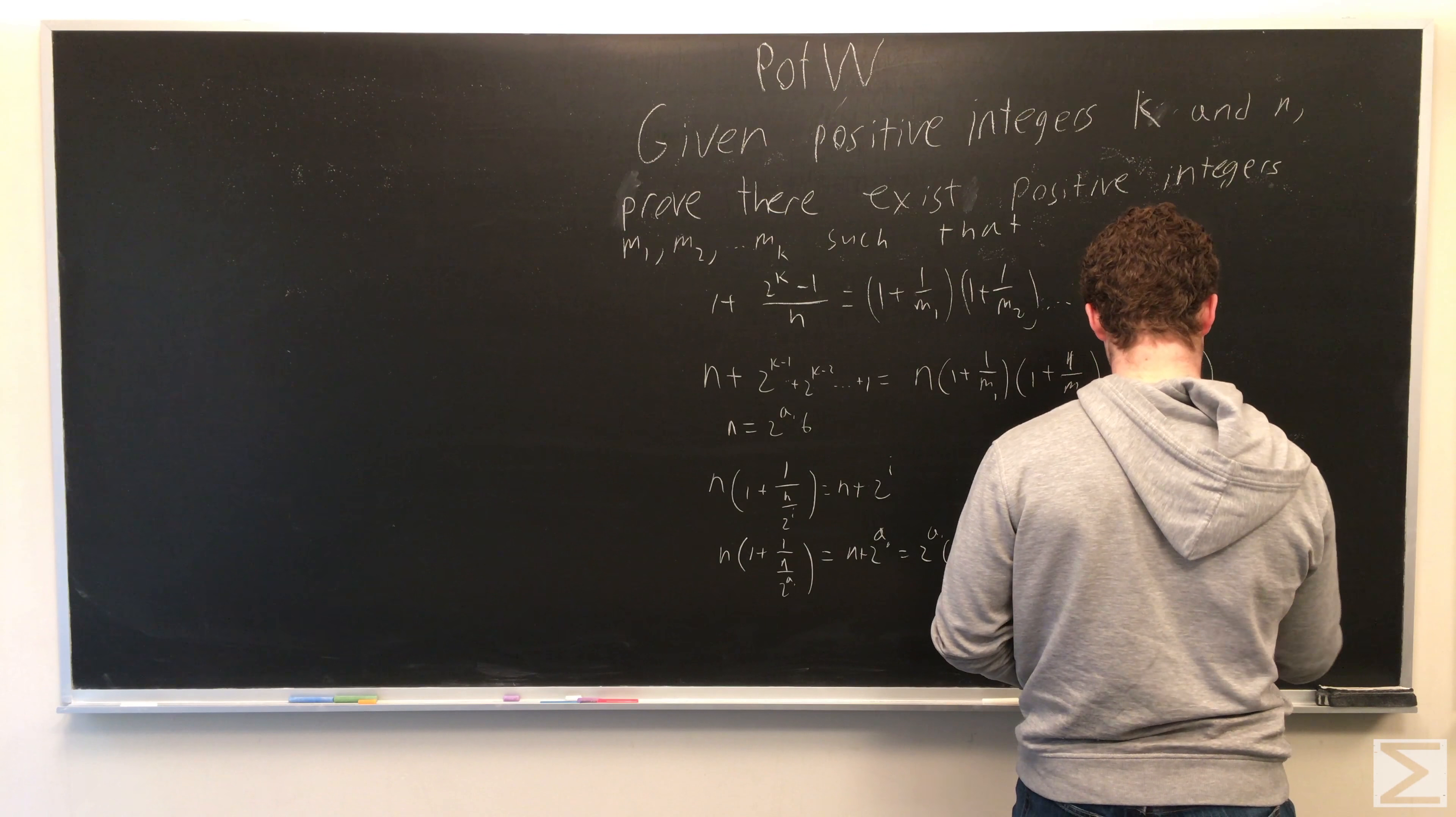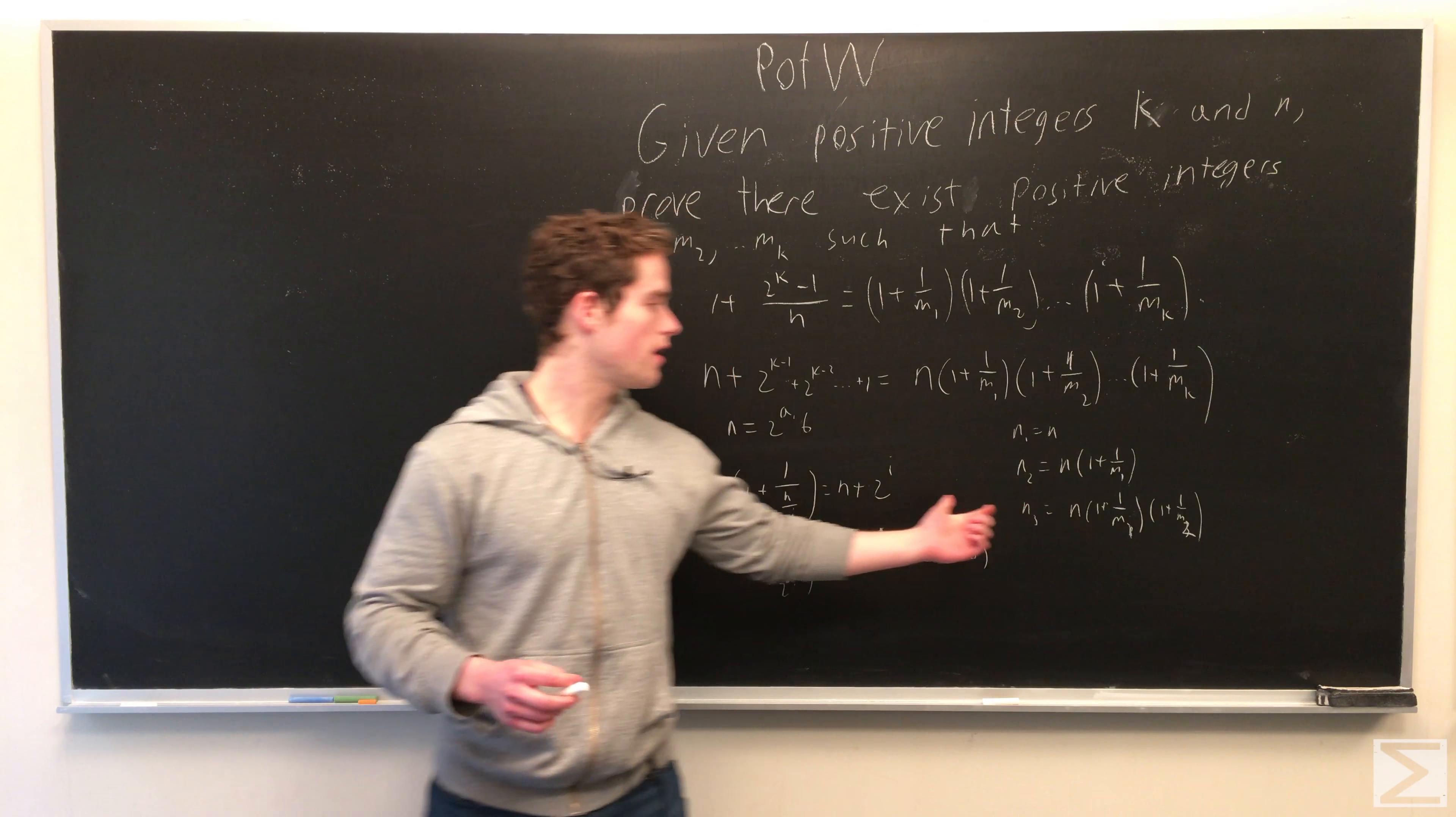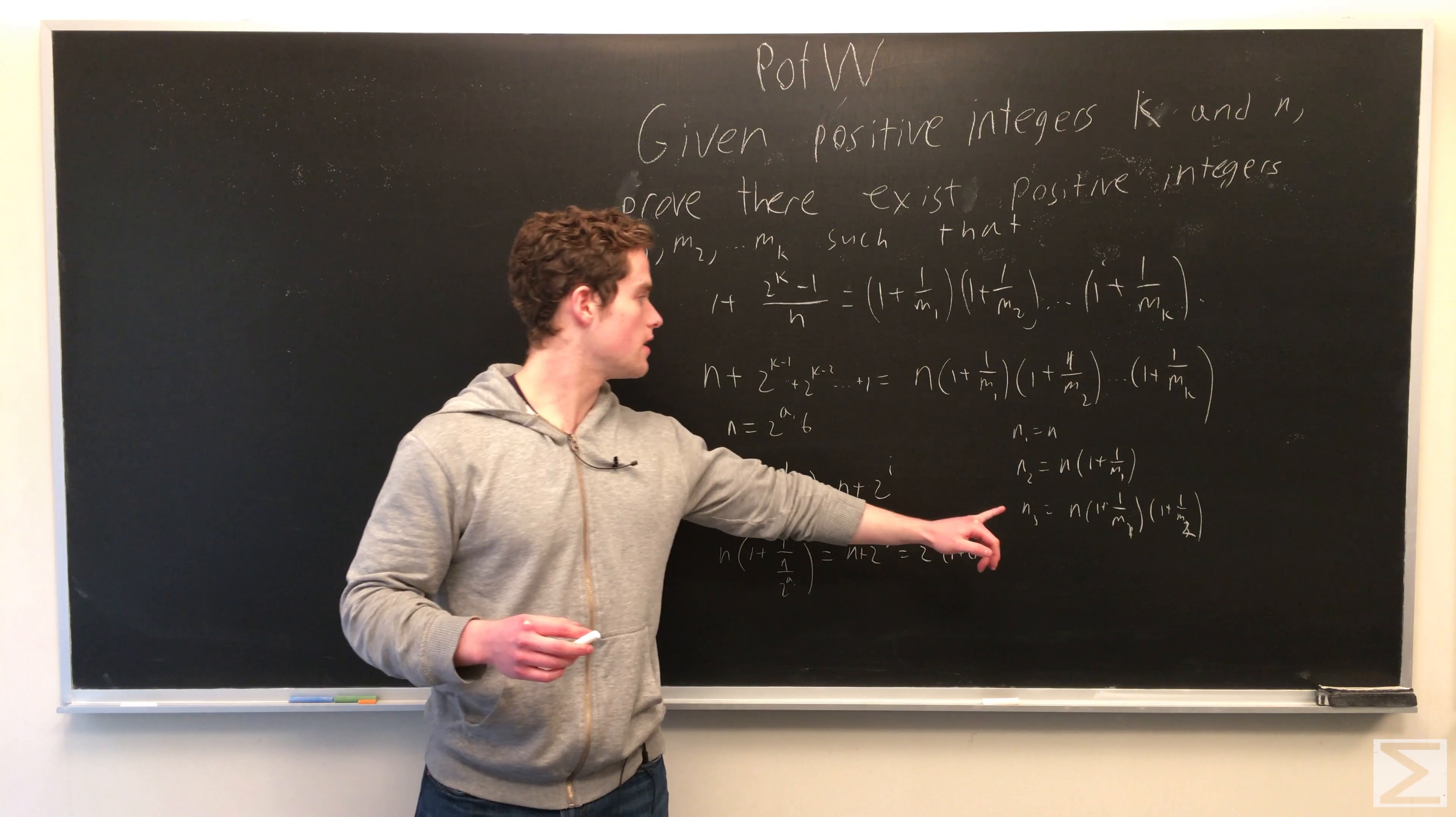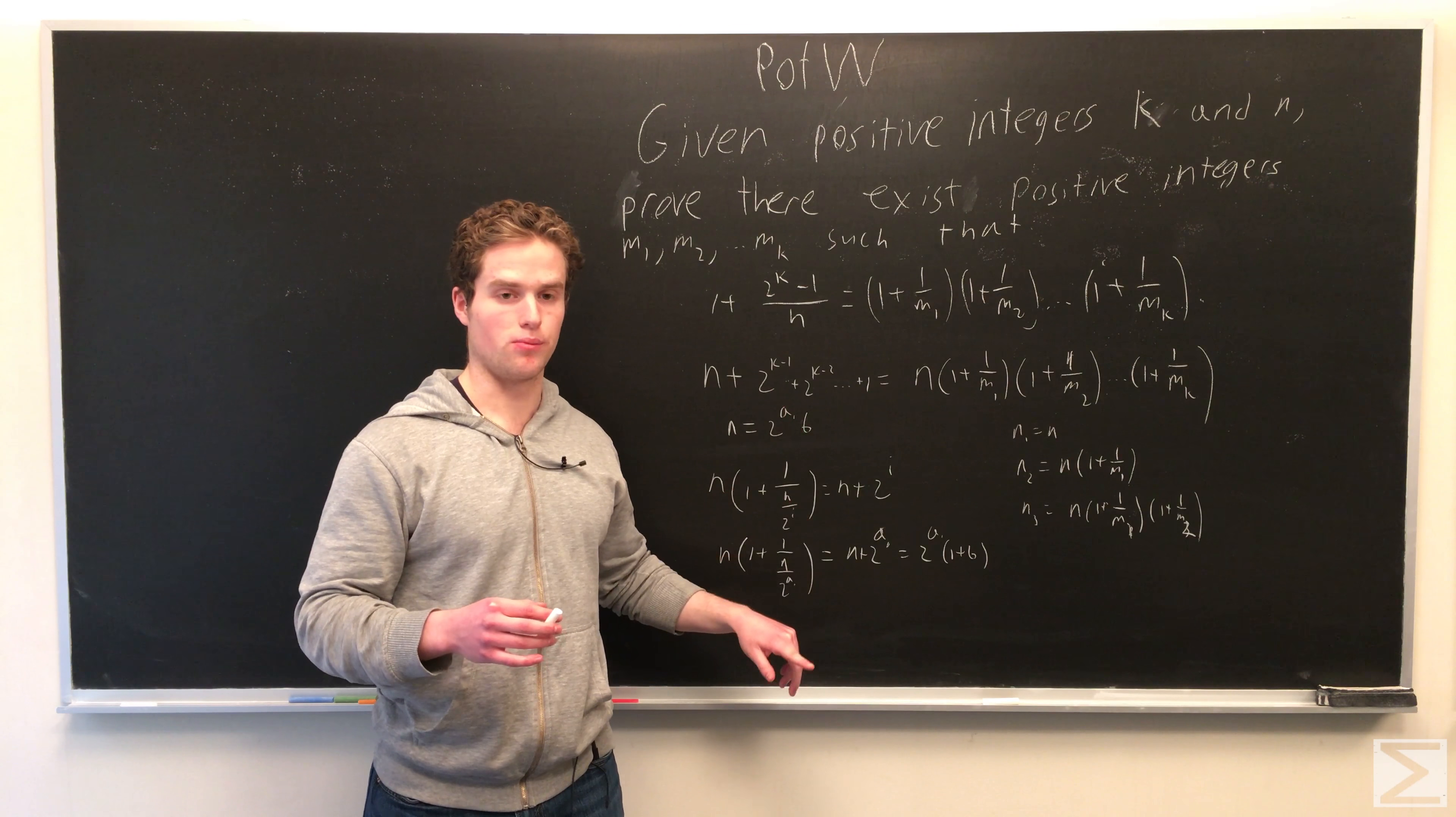m2 would be n2 over 2 to the a1 plus 1, n3, etc. And so once we reach that, then we can go down in powers.